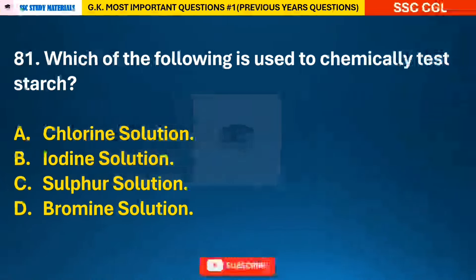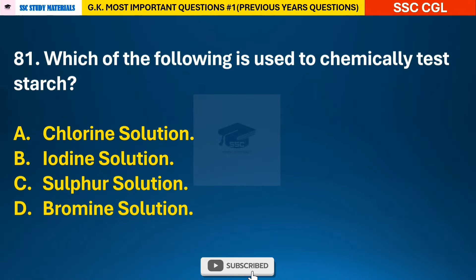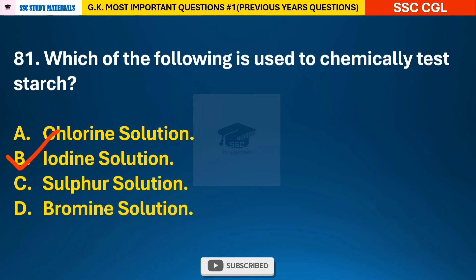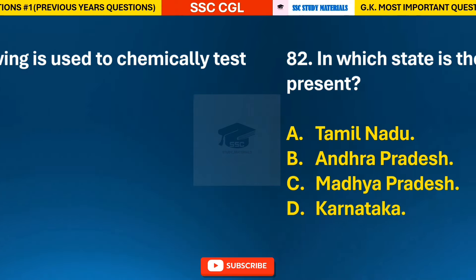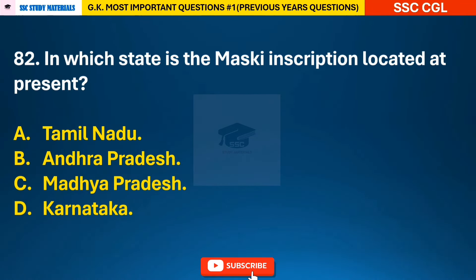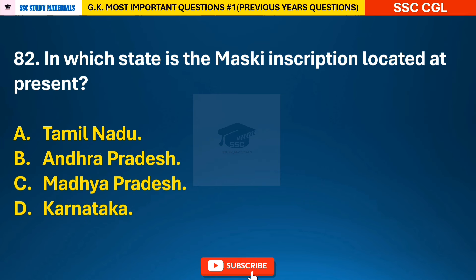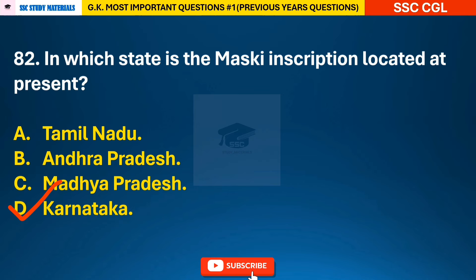Question 81: Which of the following is used to chemically test starch? — answer B: iodine solution is used to chemically test starch. Question 82: In which state is the Muski inscription located at present? — answer D: at present it is located in Karnataka.